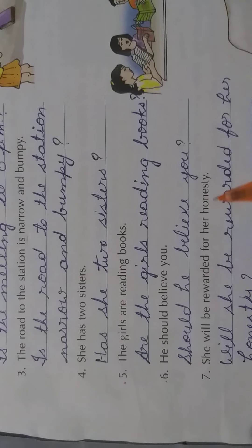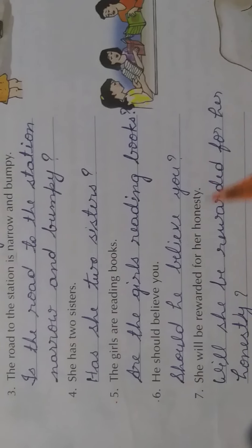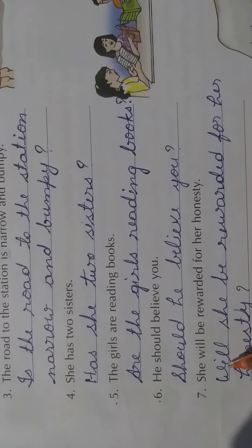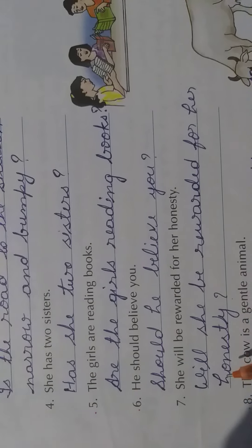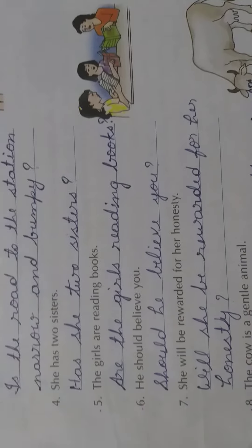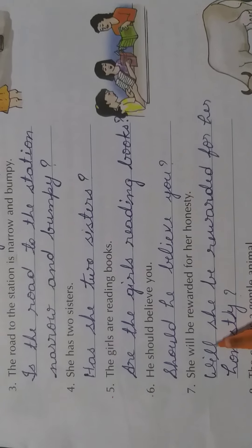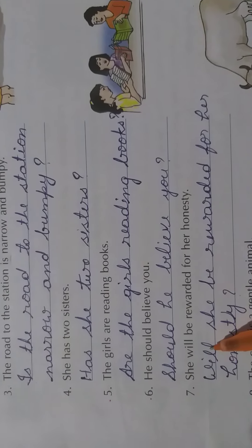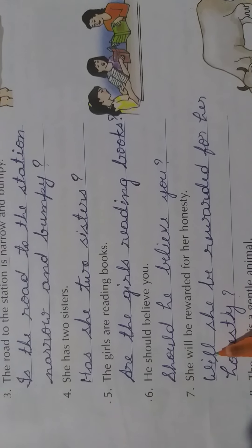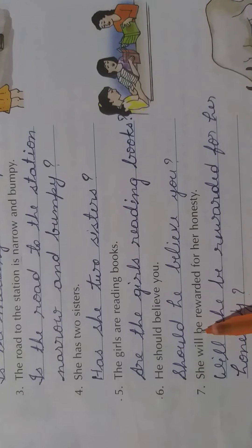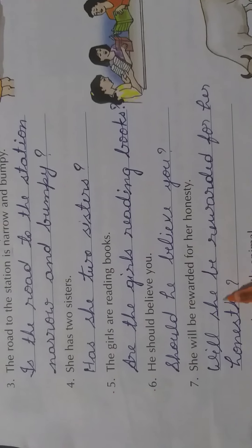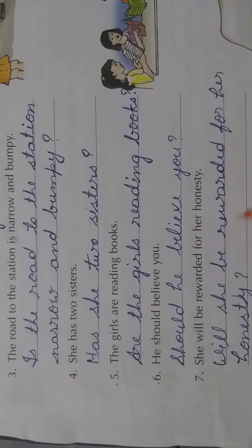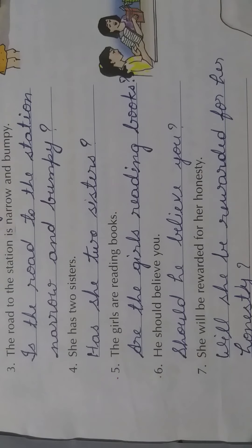'She will be rewarded for her honesty.' We will start the sentence with 'will.' One thing you have to keep in mind: we will not write 'Will be she' - that would be wrong. The correct form is 'Will she be rewarded for her honesty?' So the order is: will, then the subject, then be.